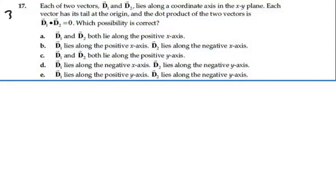This is problem 3.17. Each of two vectors, d1 and d2, lie along a coordinate axis in the xy plane. Each vector has its tail at the origin, and the dot product of the two vectors, d1 dot d2, is zero. Which possibility is correct?